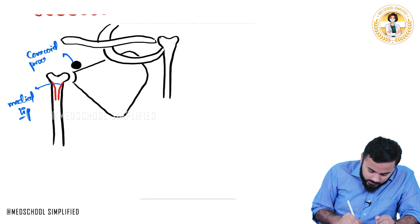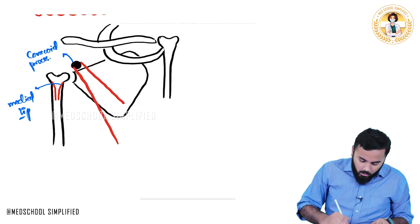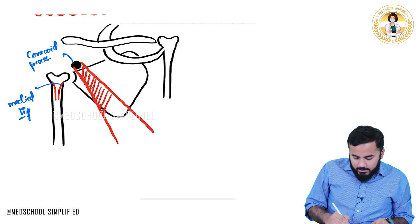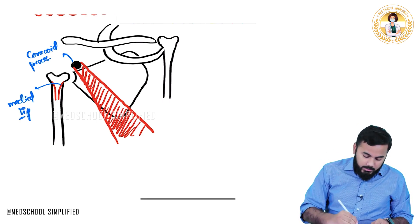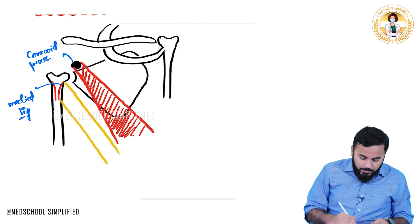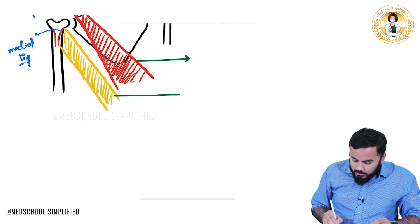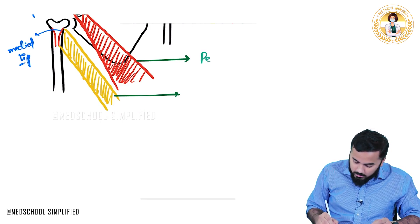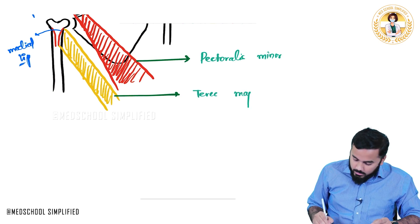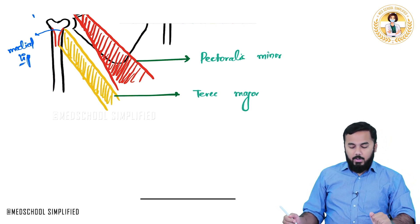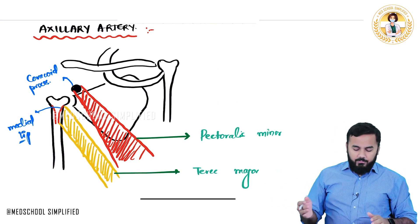The muscle coming out of the coracoid process is your pectoralis minor muscle. And the muscle coming out of the medial lip of the humerus is your teres major. So this muscle here is called pectoralis minor, and this muscle is called teres major, attached to the medial lip. Print this picture in your mind because I will be drawing it again with unnecessary things removed.